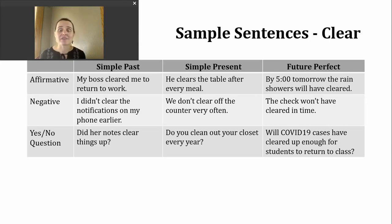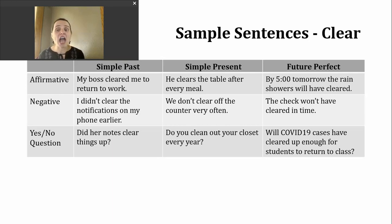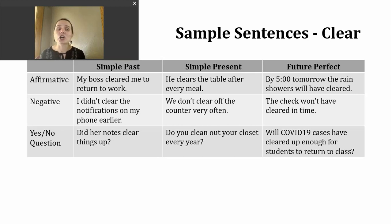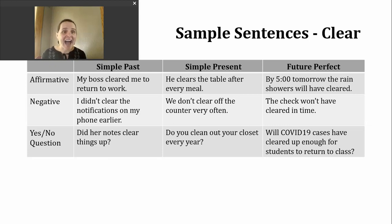If I want to make a negative sentence in future perfect, I insert "not" right after "will" — native speakers often use the contraction "won't." Here's an example: "The check won't have cleared in time." This sentence goes back to that meaning of approval or authorization. For a yes-or-no question in the future perfect, use "will," then the subject, then "have," and the participle form of the verb. For example: "Will COVID-19 cases have cleared up enough for students to return to class?"